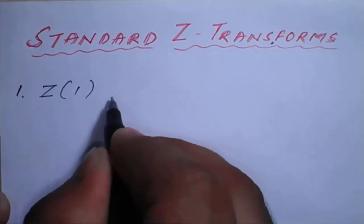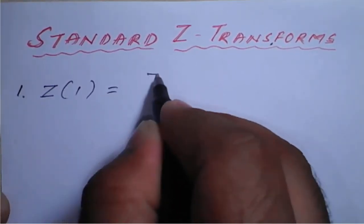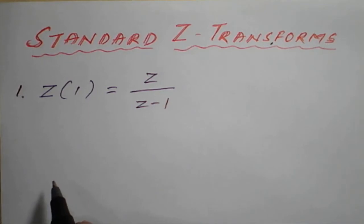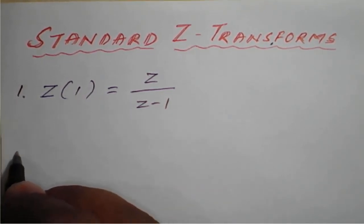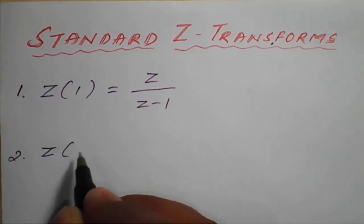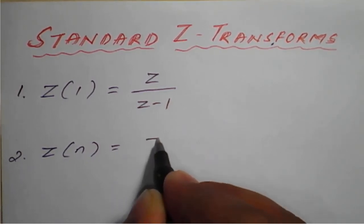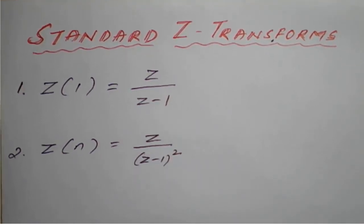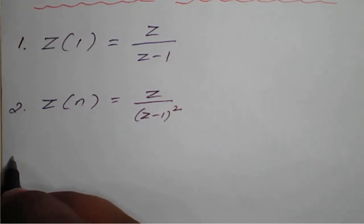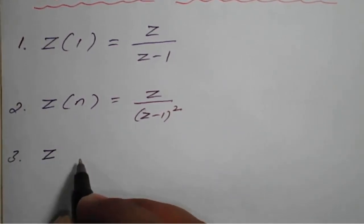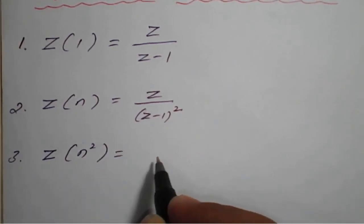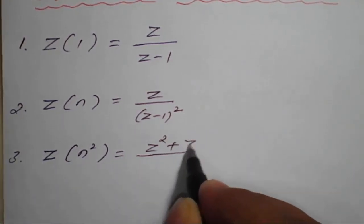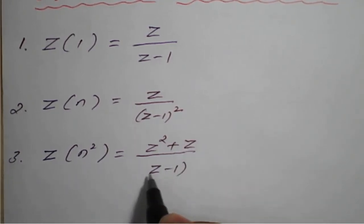The first standard form: Z transform of 1 is equal to Z divided by Z minus 1. The second one: Z transform of n is equal to Z divided by (Z minus 1) whole square. The third one: Z transform of n square is equal to Z square plus Z, divided by (Z minus 1) whole square.